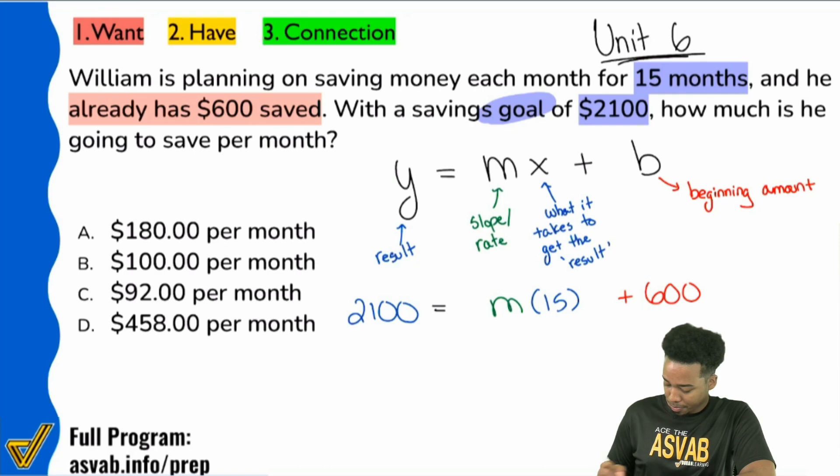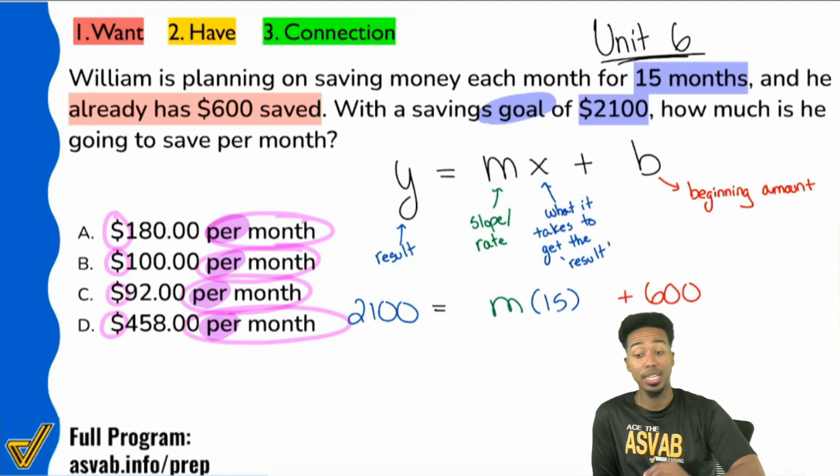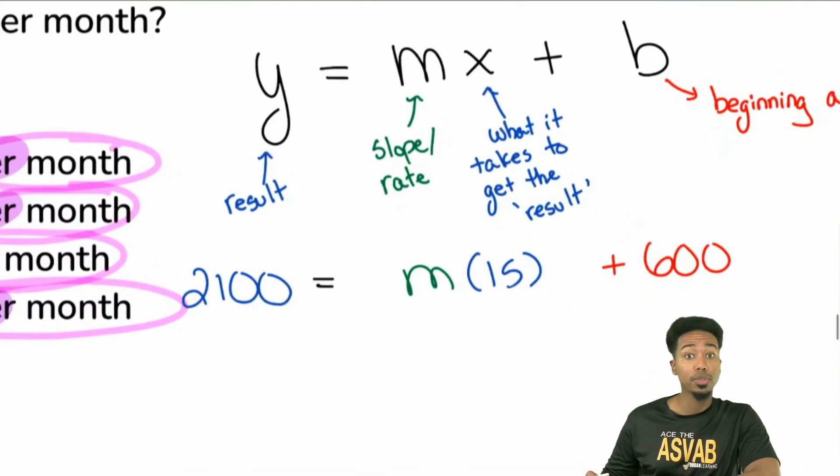Notice, dollars per month, dollars per month, dollars per month. Do you see, can you tell, that from the word per, we are looking for the rate? Is that clear, everybody? We're looking for... Excellent. So with that, all we have to do is solve this and we're done.